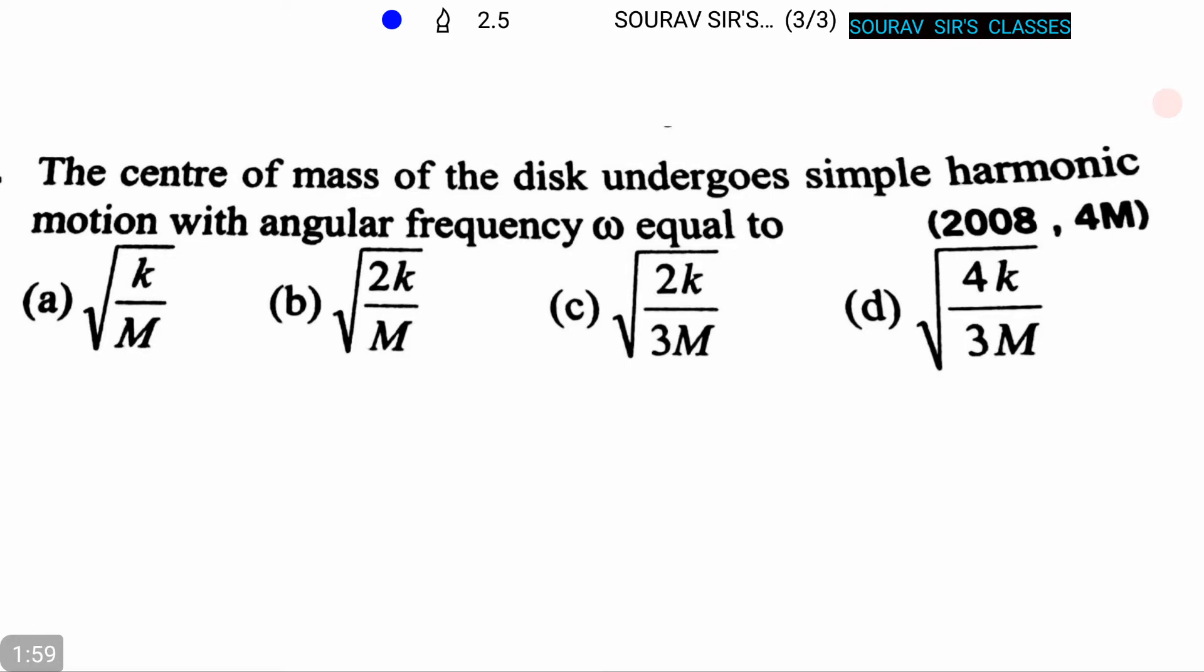Now let's proceed to the next question. The question is: The center of mass of the disk undergoes simple harmonic motion with angular frequency ω equal to... We have to find the value. Four options are given: option A is √(k/M), option B is √(2k/M), option C is √(2k/3M), and option D is √(4k/3M). So now let's start.